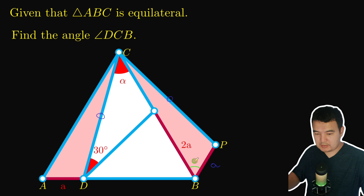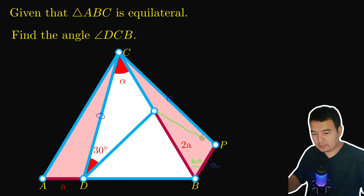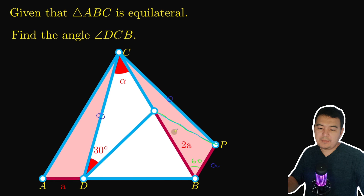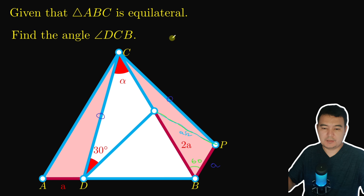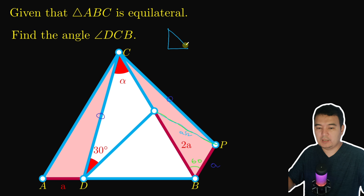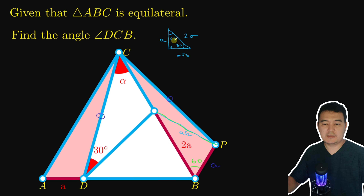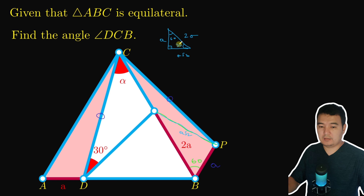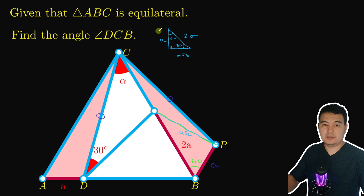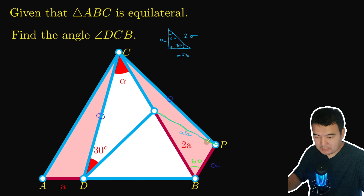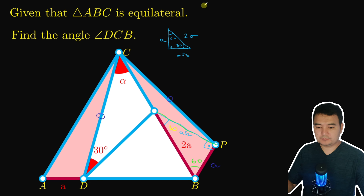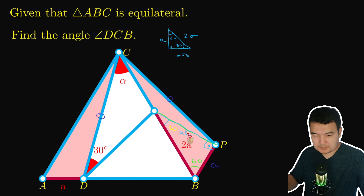Now let's do some angle calculations. We have 60 degrees here. Connecting this point, the length of this segment is going to be a times root of 3. This is a special triangle with sides a, a√3, and 2a, and angles 30, 60, and 90 degrees. So we have 90 degrees over here and 30 degrees over here.